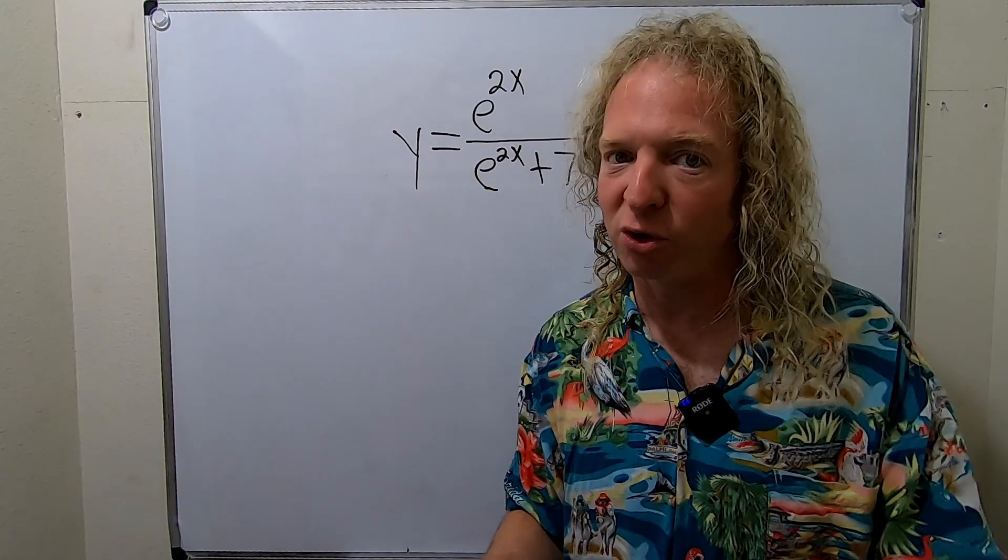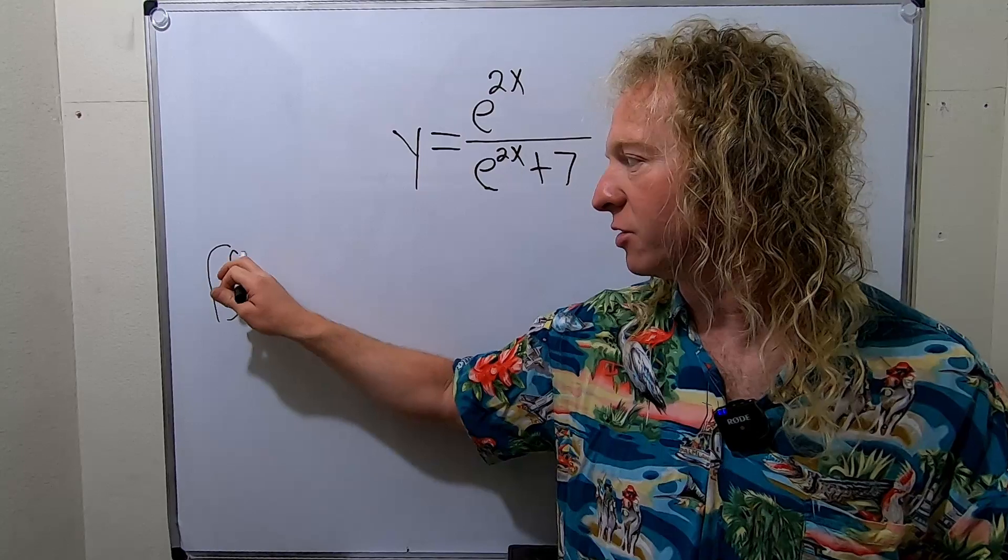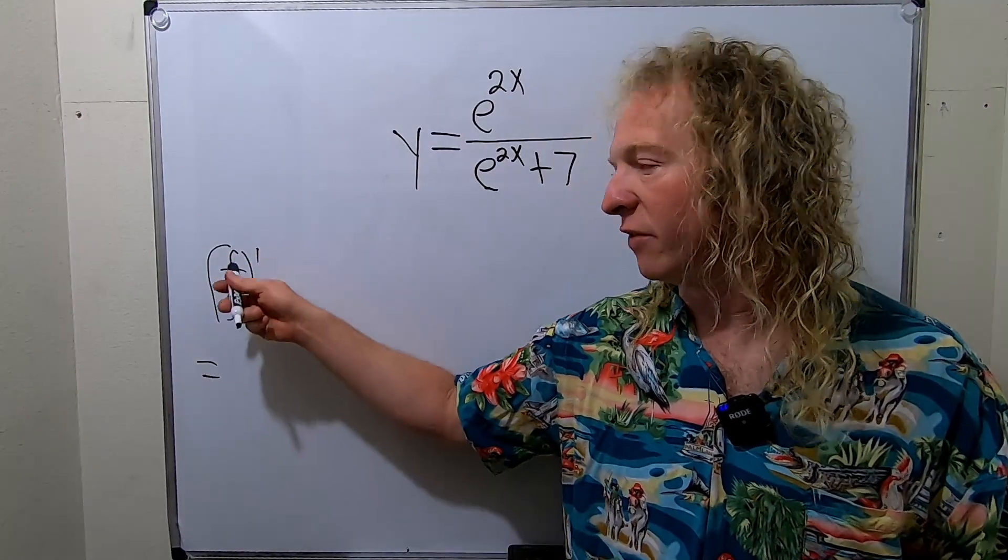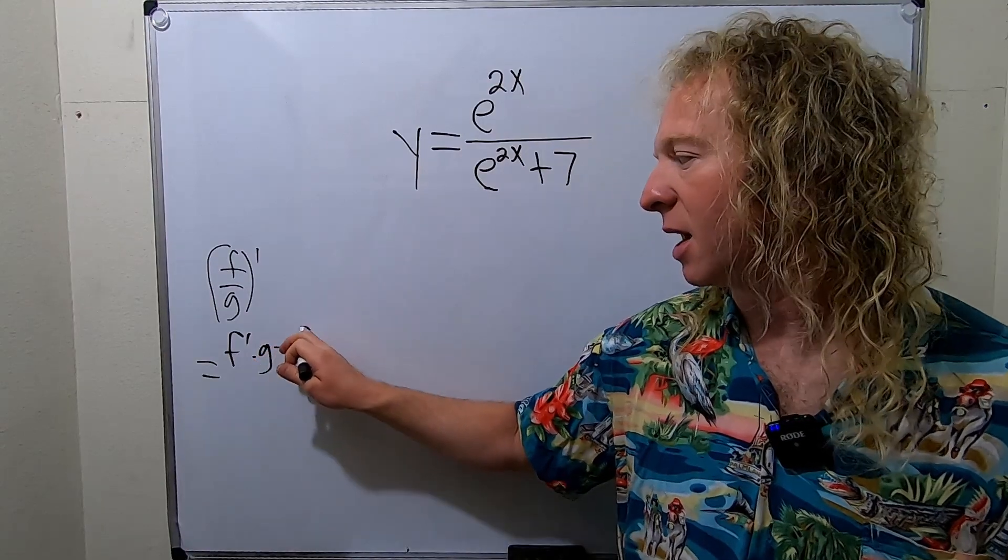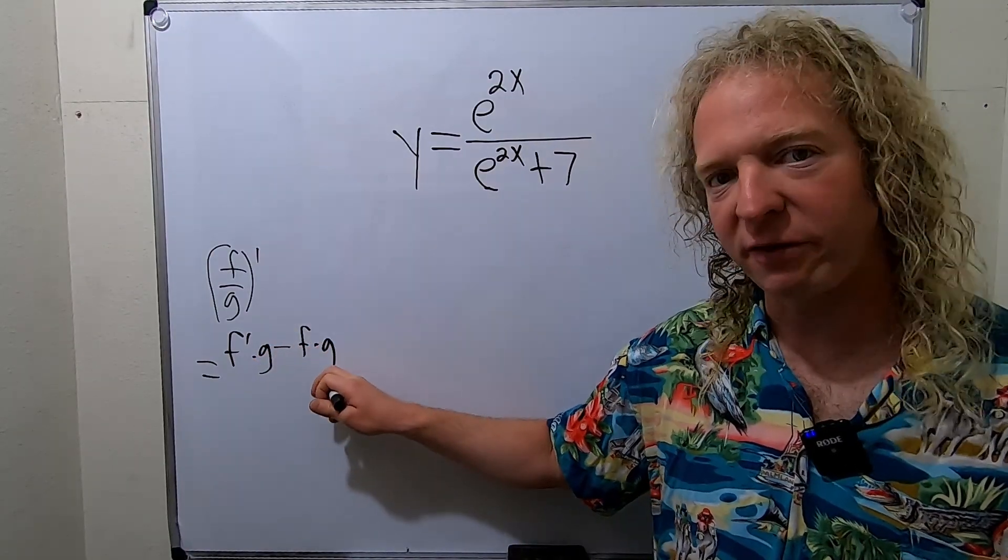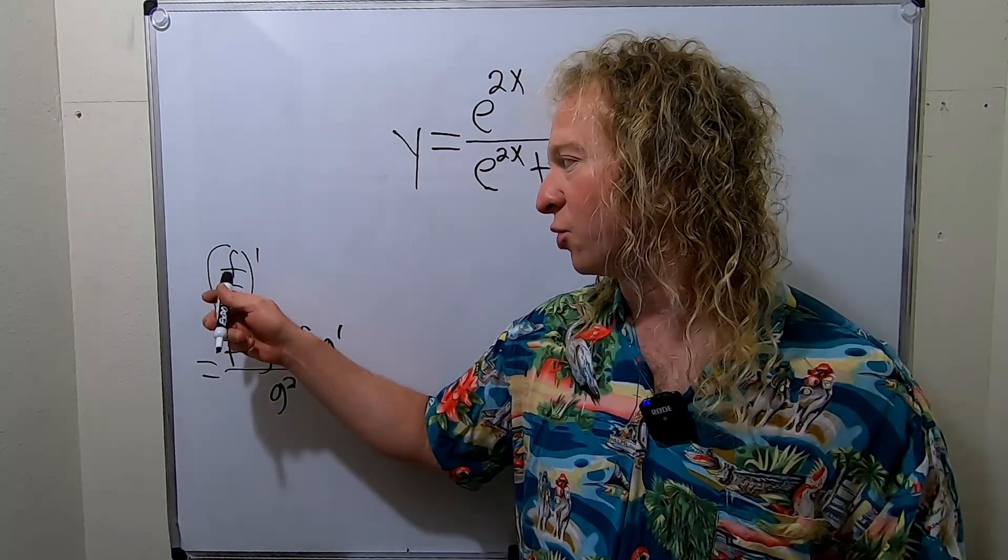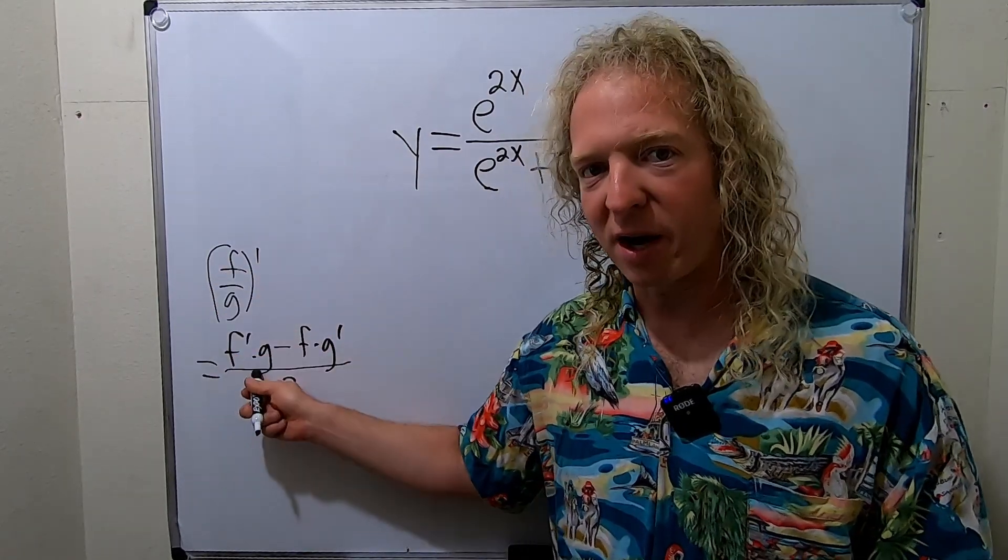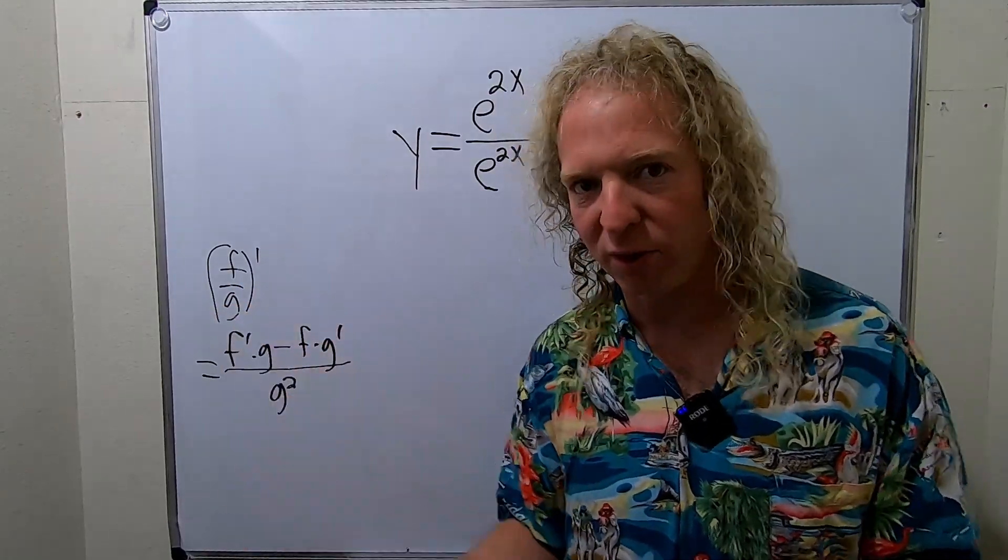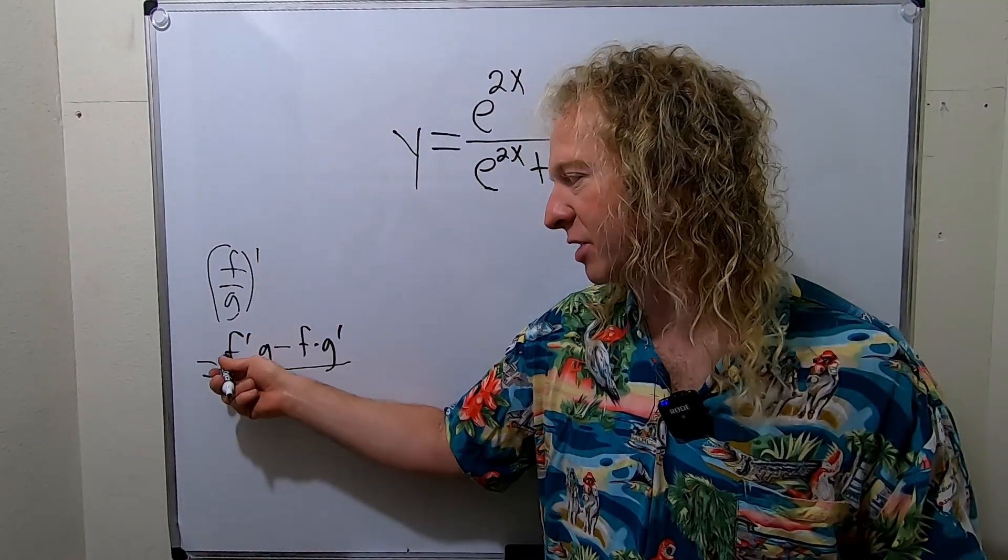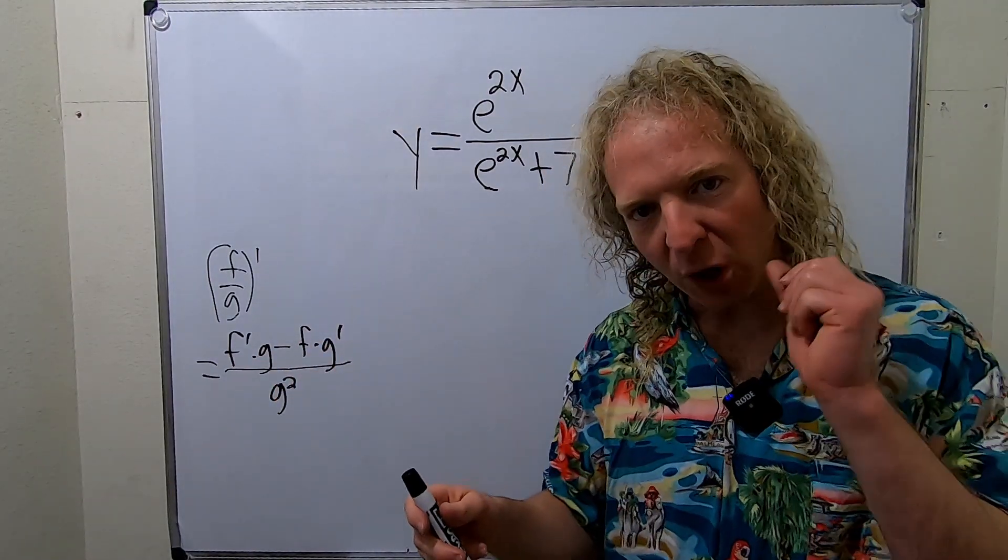So first, let me refresh your memory on the quotient rule. So if you have f over g and you take the derivative, it's the derivative of the top times the bottom minus the top times the derivative of the bottom all over the bottom squared. You can also think of it as derivative of the first times the second minus the first times derivative of the second over the second squared.